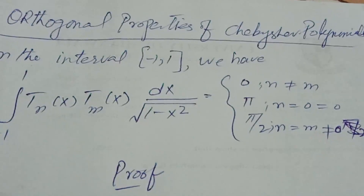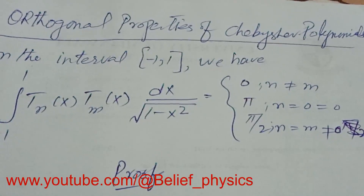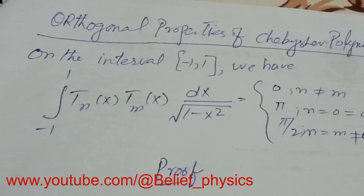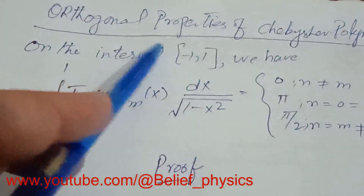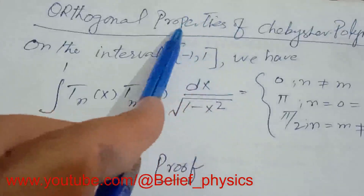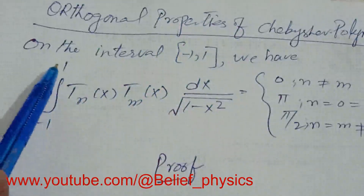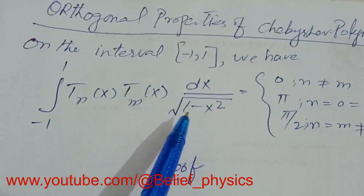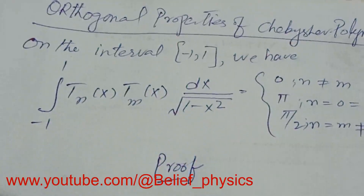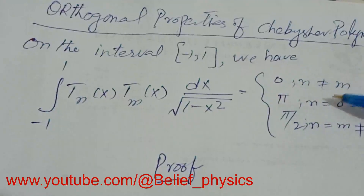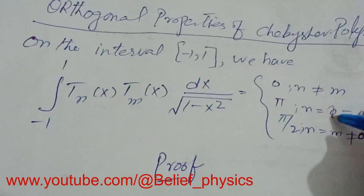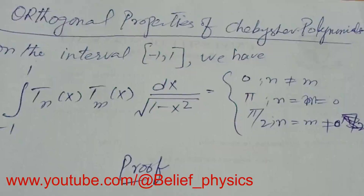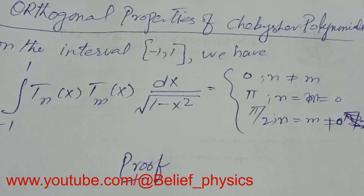Bismillahirrahmanirrahim. We have to prove the orthogonal properties of the Chebyshev polynomials. On the interval minus one to one, they are orthogonal: the integral from minus one to one of T_n(x) times T_m(x) dx over the square root of one minus x squared equals zero if n is not equal to m, equals pi if n equals m equals zero, and equals pi over two if n equals m but both are not equal to zero.